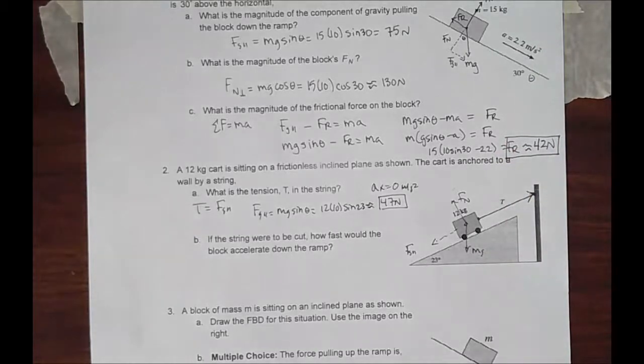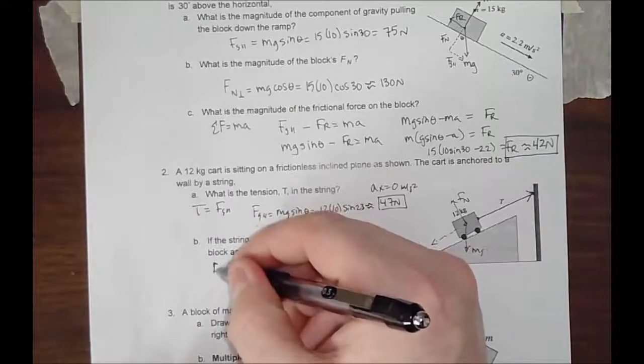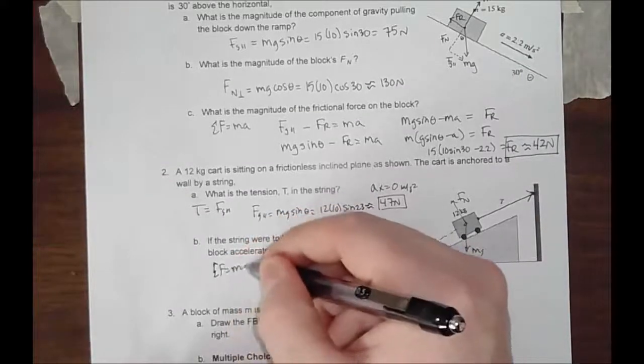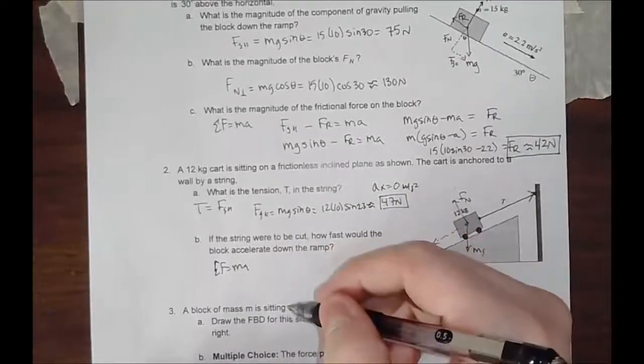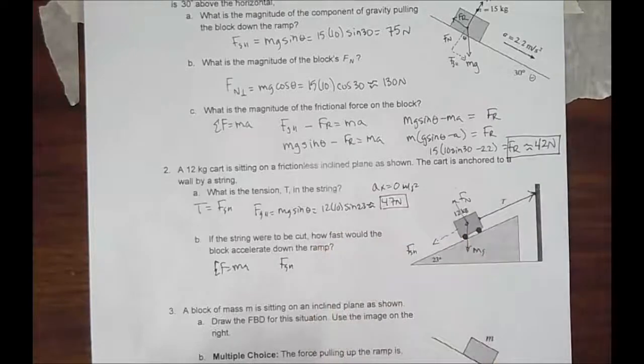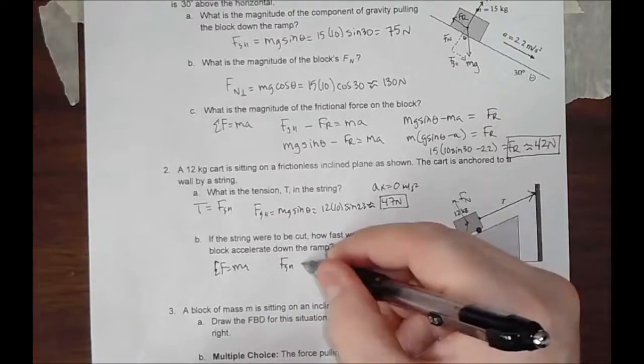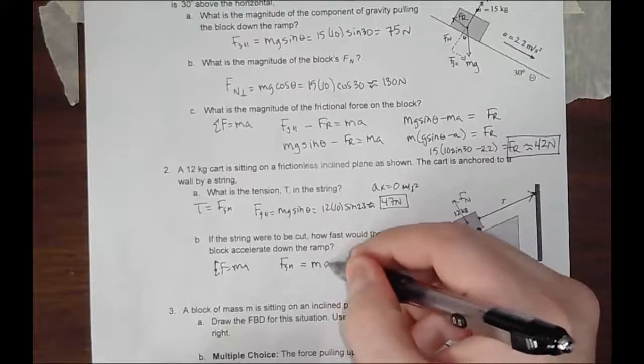We are on a frictionless plane. The only force using Newton's second law that's pulling down the ramp as soon as we cut this is that component of gravity. So it's FG parallel. There is no friction pulling back the ramp. There is no more tension holding it still. And that would be equal to the mass times the acceleration of the system.